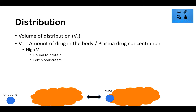Some drug might not be in the bloodstream at all — it could have left. Small lipophilic molecules can leave the bloodstream and be stored in fat. That would also cause a high volume of distribution, because a lot of drug may be stored in fat or bound to protein, leaving only a small amount actually unbound and in the plasma performing its action.